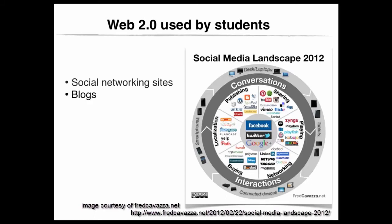Blogs, or web logs, are discussion or information sites published online by one or more authors. They consist of entries or posts displayed in reverse chronological order. Blogs are interactive — they may allow visitors to leave comments, be linked to other blogs or social network sites, and generate RSS feeds to inform readers of updates. Blogs can be personal, corporate, organizational, or focused on a particular subject. Blogs may also be specific to a media type: vlogs are video blogs, podcasts are audio blogs, and photo blogs focus on photographs.